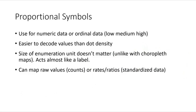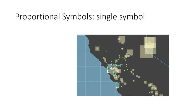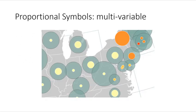Proportional symbols can be used for ordinal data or continuous numeric data. They're definitely easier to decode than dot density. They detach from the size of the enumeration unit, so you aren't beholden to the area of a census block, county, or state — that's how you can get away with plotting raw population counts or sums. You can use a single symbol or go multivariable. Experiment with transparency, layer orders, and fill — you can actually encode quite a lot of data on a map this way.